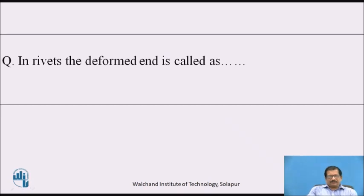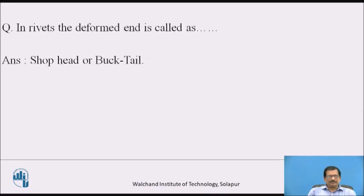Now pause the video and answer this question: In rivets, the deformed end is called as? The answer is: the deformed end is called the shop head or buck tail.